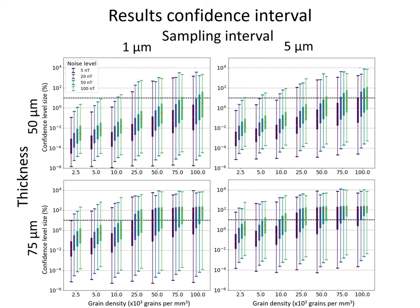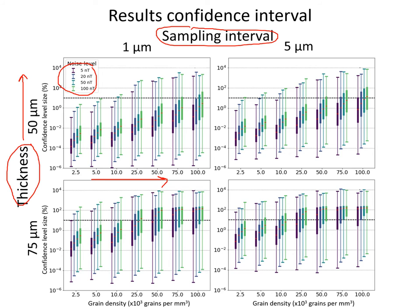In this figure, we plotted the size of the confidence spheres on the y-axis against the different grain densities on the x-axis and noise levels in the boxplot figure under various conditions — various sampling intervals and thicknesses of the sample. We can immediately see that larger noise levels make larger confidence sphere sizes, so the larger the noise, the worse the solution becomes. We also observe that thicker samples of 75 micrometers perform worse than the thinner samples of 50 micrometers as their confidence sphere size increases. The last thing we see is that small grain densities have very low confidence sphere sizes compared to the higher grain densities. Therefore, the smaller grain densities have better solutions.